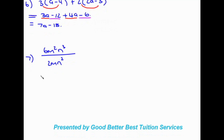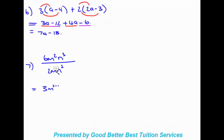Looking at the next example: 6m²n³ divided by 2mn². We look at the numbers first — 6 divided by 2 gives 3. Then for m: it's m to the power of 2 minus 1, which is m to the power of 1. Then for n: it's n to the power of 3 minus 2, giving n to the power of 1. So the answer is 3mn — we don't need to show the power of 1.